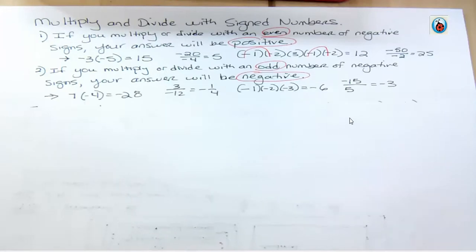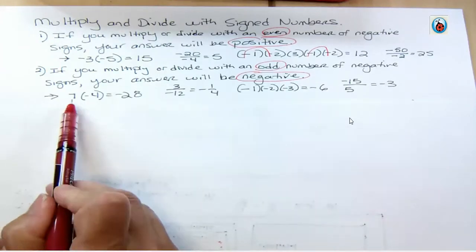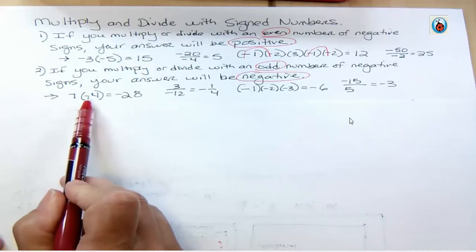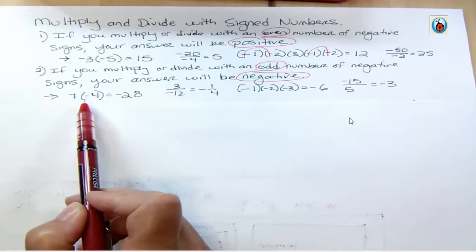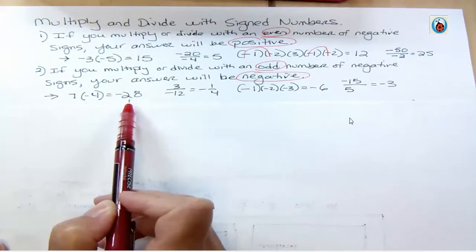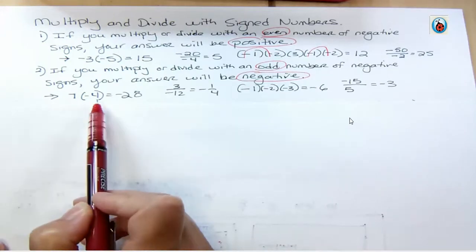An odd number could be 1, which is what happens a lot. You have a positive and a negative. You have one negative sign. See how these two canceled each other out? There's no negative sign to cancel that out. So I get negative 28. Notice the 7 times 4 part stays the same.